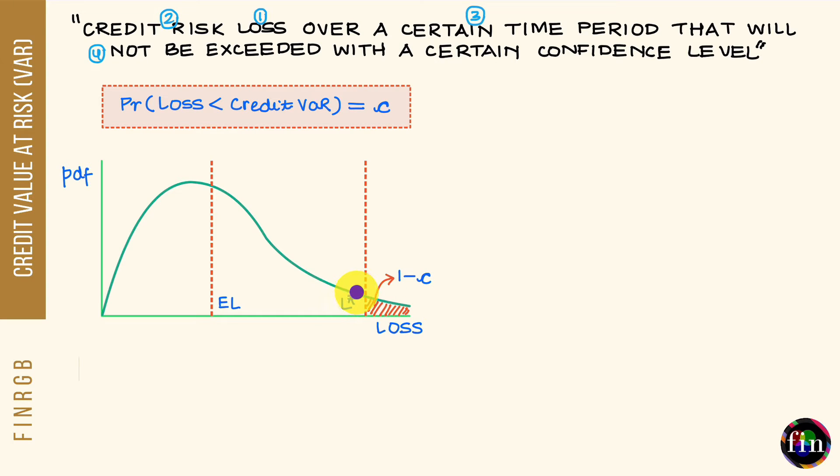This L star is that loss number, the probability of whose being exceeded is 1 minus our chosen level of confidence and whose probability of not being exceeded is equal to my chosen level of confidence. As per this definition of credit VAR, then my credit VAR is simply equal to this L star which I have read from this probability distribution.